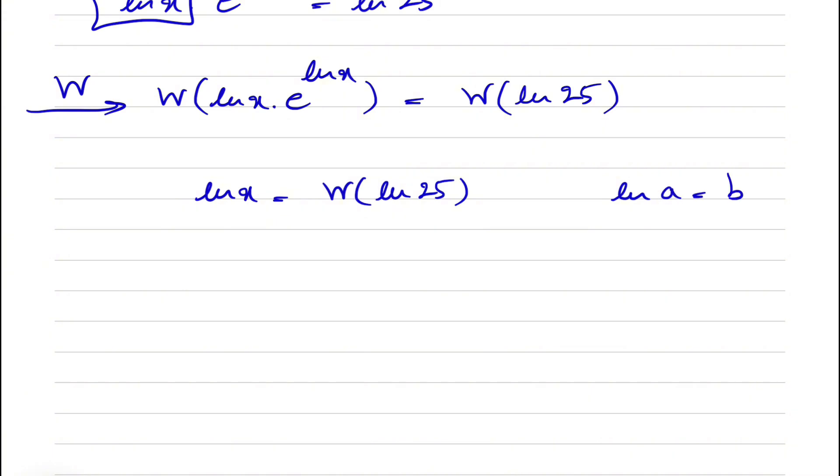From the definition of ln, when we have ln of a is equal to b, we know the base of ln is e, so e to the power of b is equal to a. So x in here would be e to the power of Lambert W function of ln of 25.